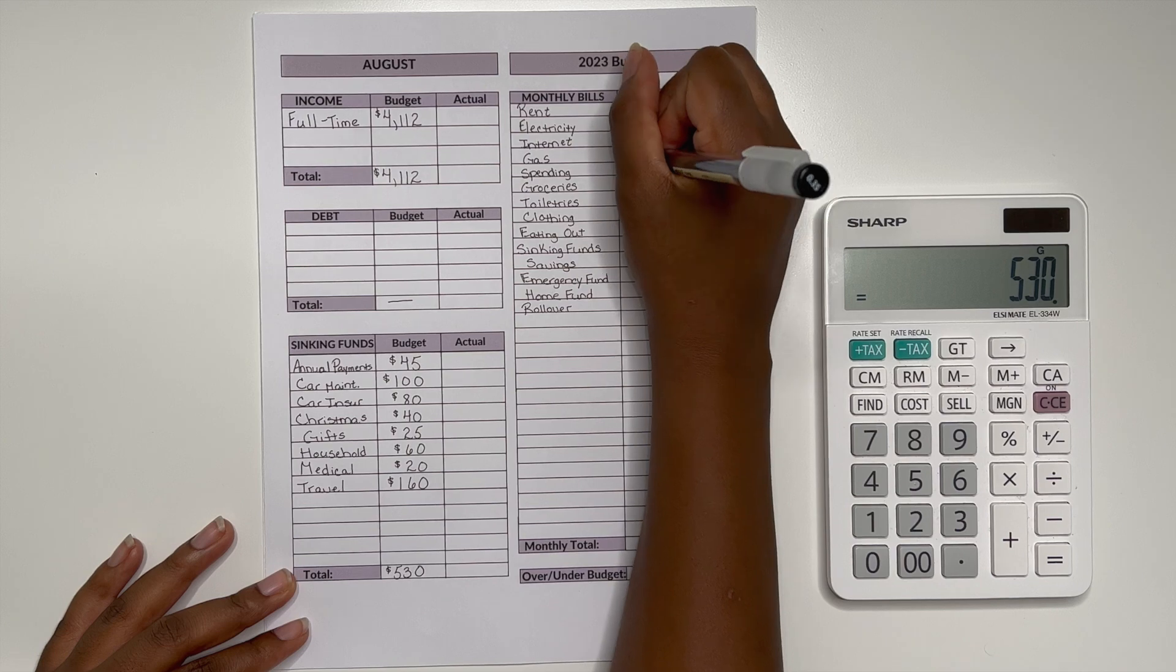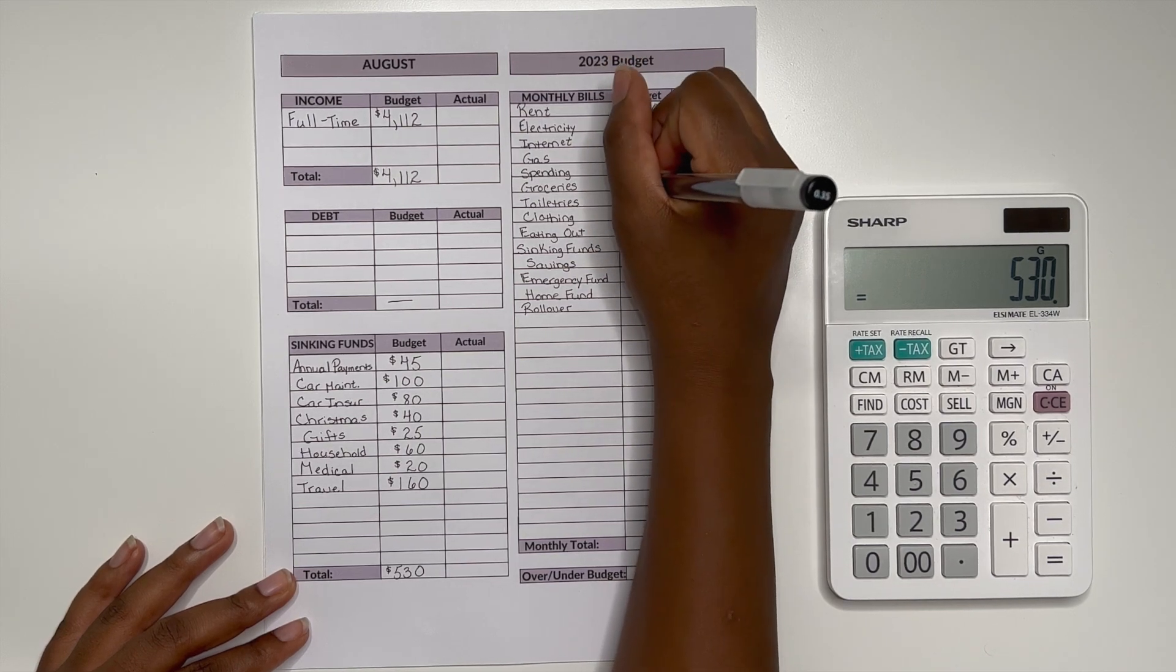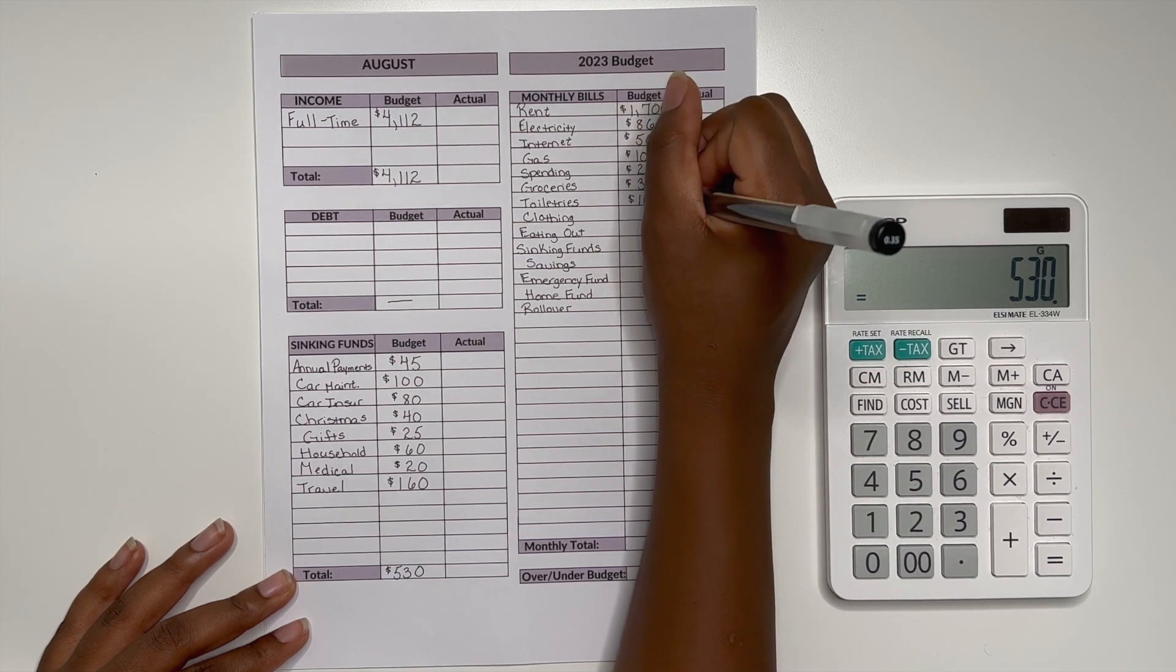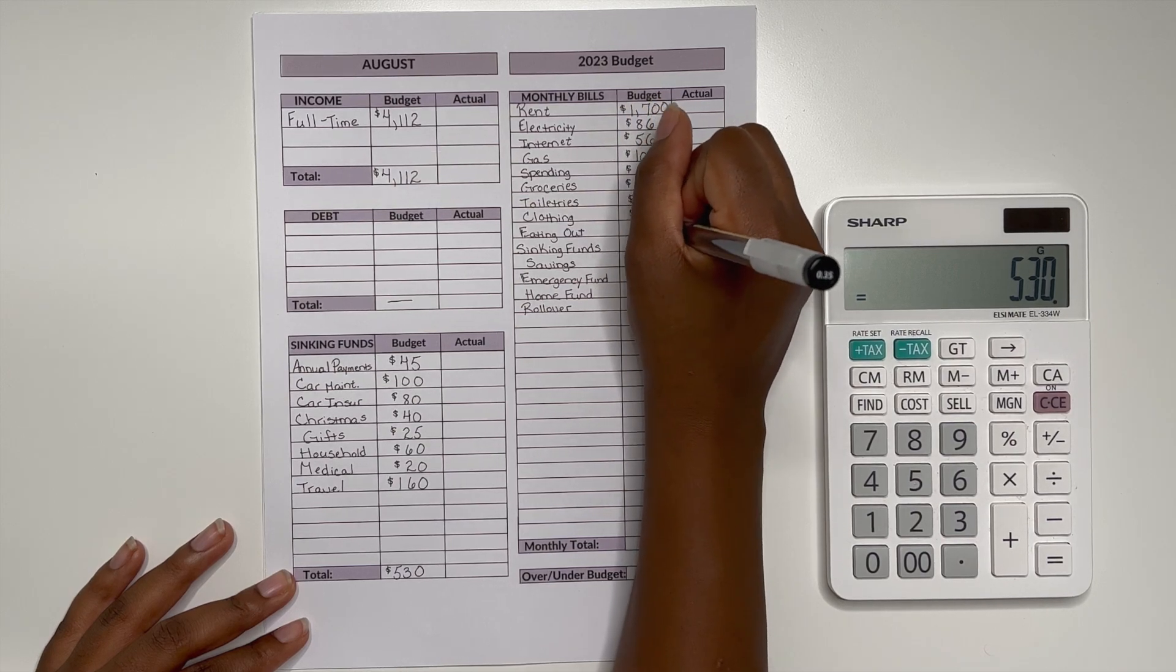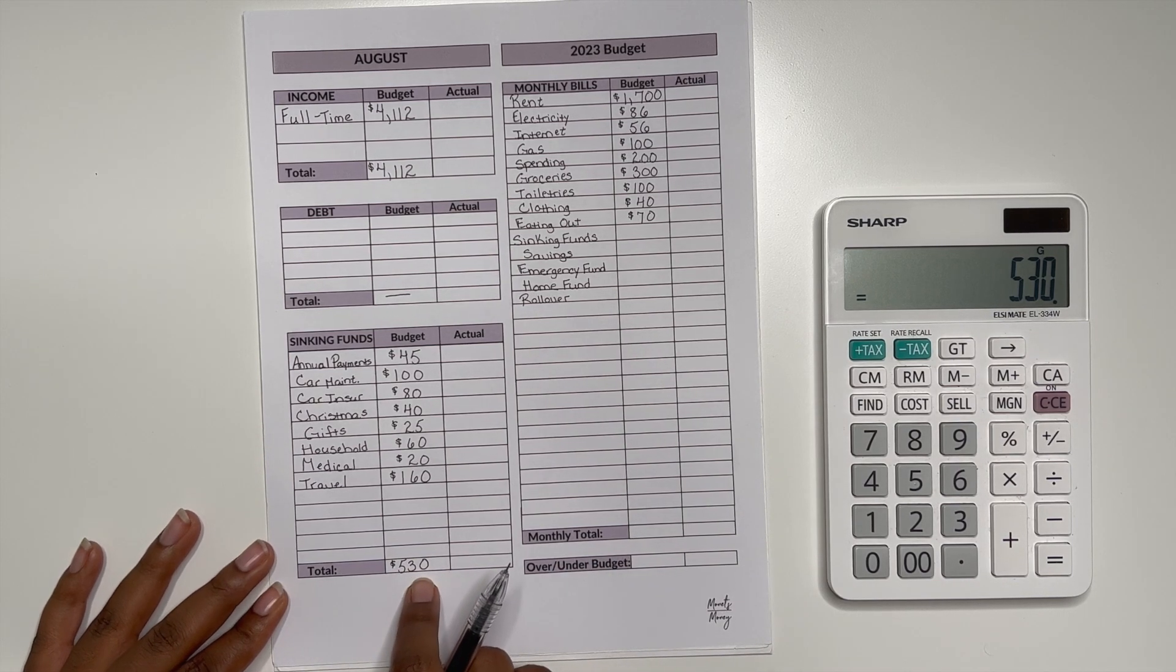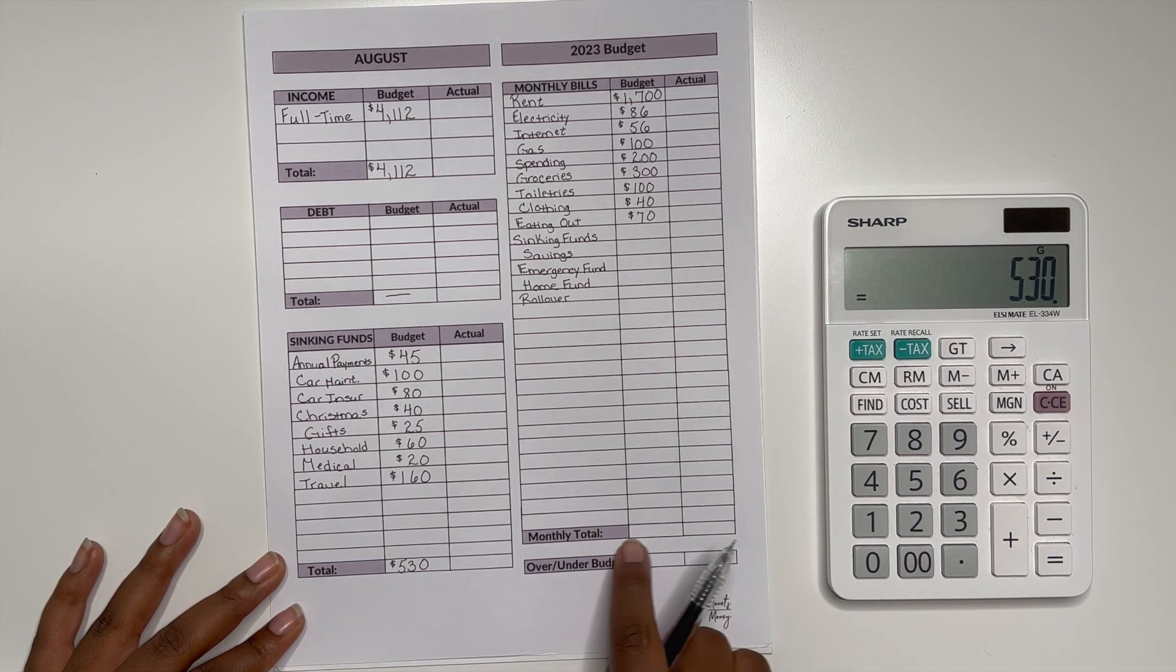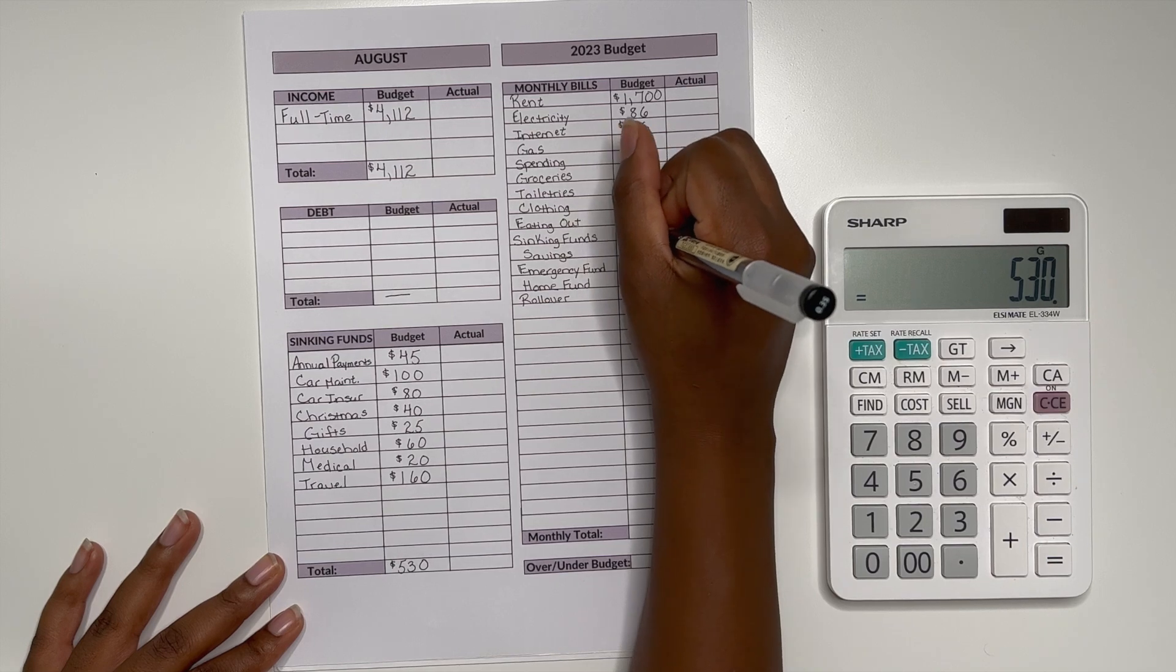And then I have my cash categories that I keep within my wallet. So gas for the month I am budgeting $100. Spending with $200. Groceries at $300. Toiletries will receive $100. Clothing with $40. Eating out at $70. So here you see I have sinking funds written. That's just the total for the sinking funds that we already have. I just like to bring it over here so that then I can include it in my total at the end. So we'll just write $530.